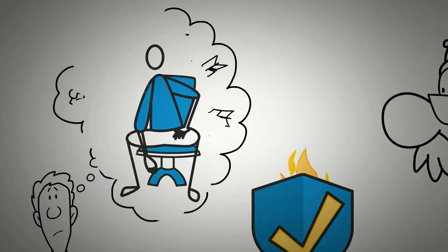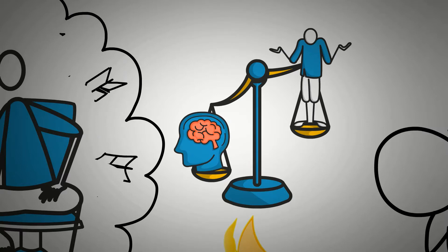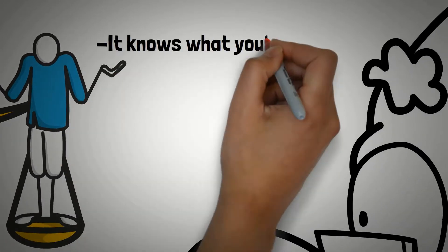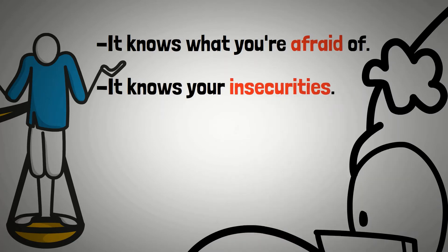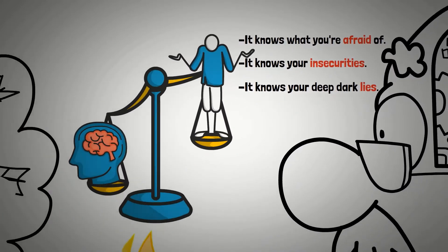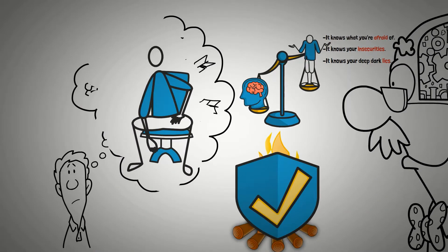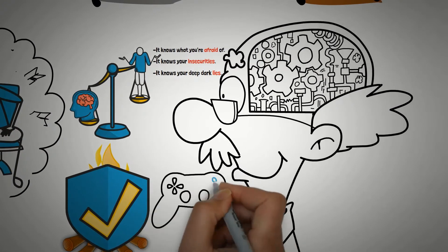And there's something about the mind. The mind has the tactical advantage over you at all times. At all times of your life, the mind has a tactical advantage over you. Why is that? It knows what you're afraid of. It knows your insecurities. It knows your deep, dark lies, and it starts to push you away from that. It pushes you in a direction that is comfortable. The mind controls everything.